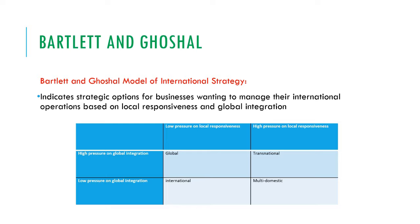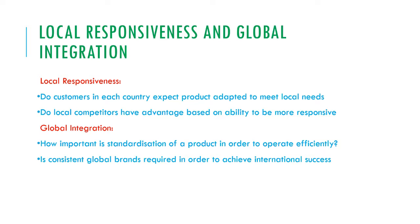You might be confused about what local responsiveness and global integration mean, so I'll explain now. Local responsiveness is about what customers in each country expect — how the product needs to be adapted. For example, a product may need to be different between the UK and the US. It's about how local people in a country respond to needs, whether you have to adapt the product, and whether local competitors have an advantage over you by being more responsive and finding out market trends faster.